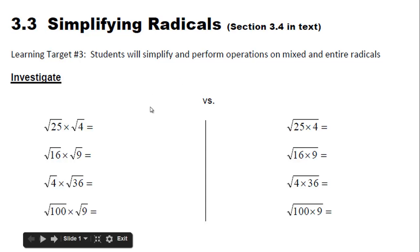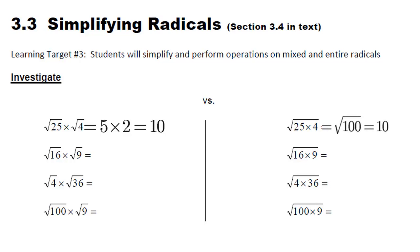So if we look at this, √25 times 4 is actually just 5 times 2, which is 10. √25 times 4 is 100, and the √100 is 10.